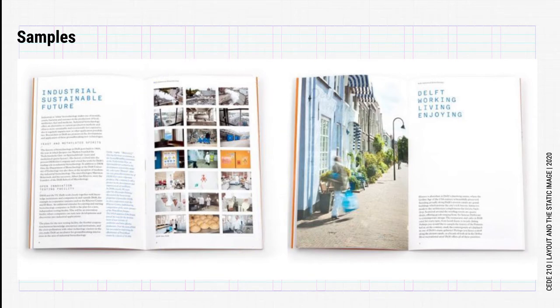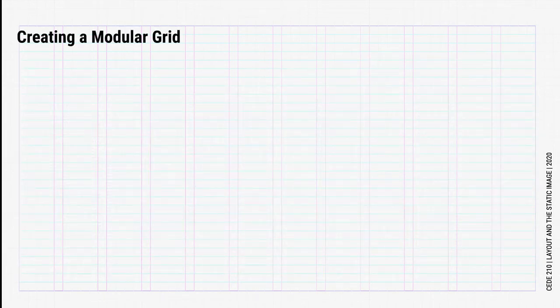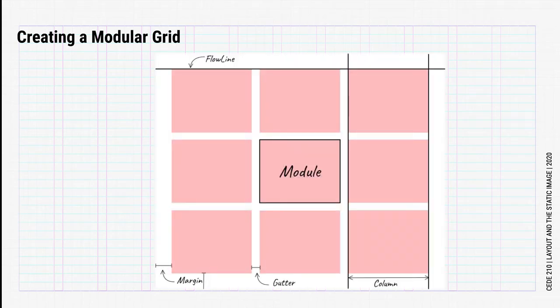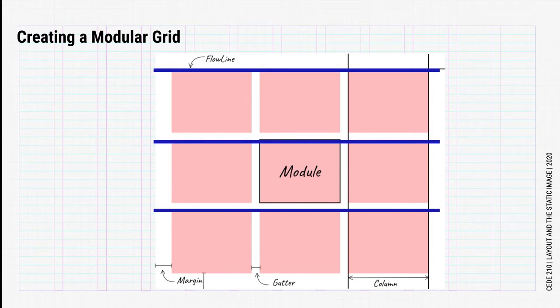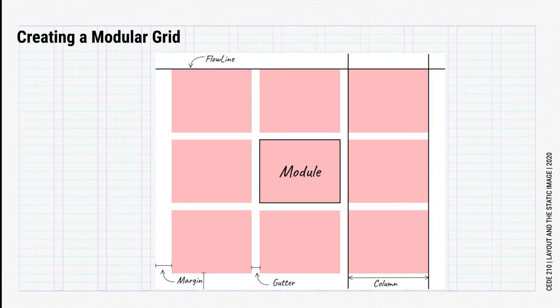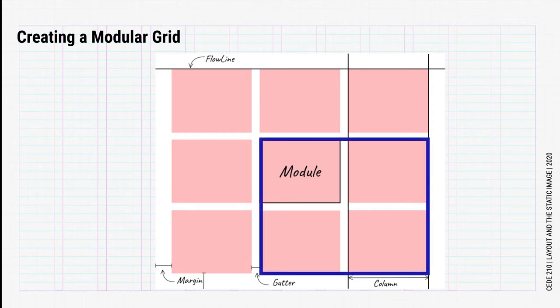After looking at these examples, think of the ways we can use modular grids. So how do we create a modular grid and what things should we consider? Similar to columnar and hierarchical grids, modular grids have the added dimension of equally spaced horizontal rules, otherwise known as flowlines, along with equally spaced vertical rules to create structure. The blocks formed by the vertical and horizontal rules are called modules. All of your content fits into these modules, either as a single block or spanning multiple blocks, otherwise known as a field. This gives you added control over the content in your design.